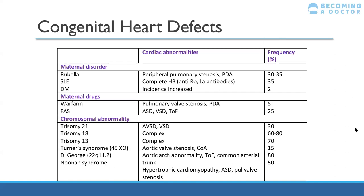Trisomy 21 is Down syndrome — AVSD is the most common congenital cardiac defect. Edwards syndrome is trisomy 18 and Patau syndrome is trisomy 13 — both are complex. Turner syndrome is associated with coarctation of the aorta — classic presentation is a short female with a long fourth finger, a heart defect with pulse anomalies, and primary amenorrhoea. DiGeorge syndrome is a microdeletion on chromosome 22 and is associated with thymic problems. Tetralogy of Fallot is commonly associated with DiGeorge, as is aortic arch abnormality.